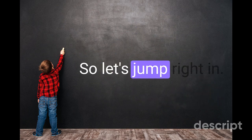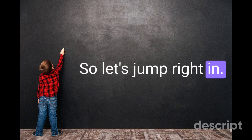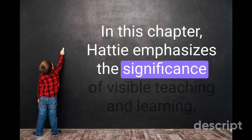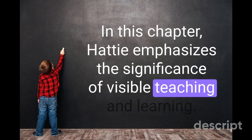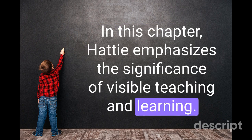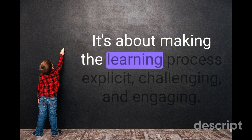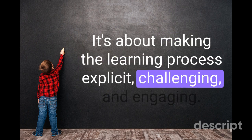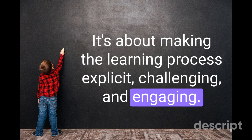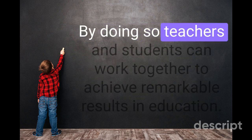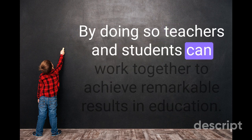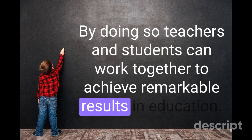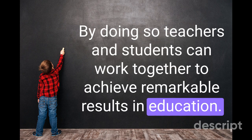So let's jump right in. In this chapter, Hattie emphasizes the significance of visible teaching and learning. It's about making the learning process explicit, challenging, and engaging. By doing so, teachers and students can work together to achieve remarkable results in education.